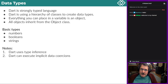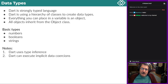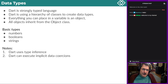Dart uses type inference and can execute implicit data conversions. This gives you a feeling of flexibility — you can assign a constant literal to a variable and there is automatic conversion if the type is compatible and there's no risk of data loss. This is called automatic implicit coercion. Type inference means the type is logically determined from how you declare the variable. If you give a variable a value, the compiler figures out and guesses the type.